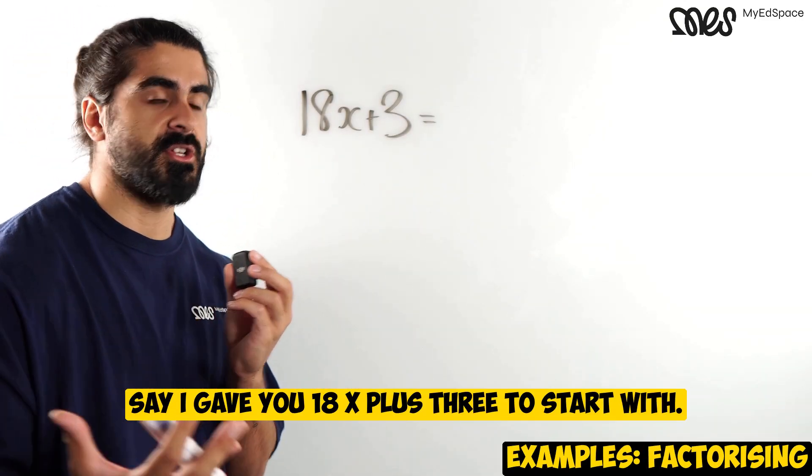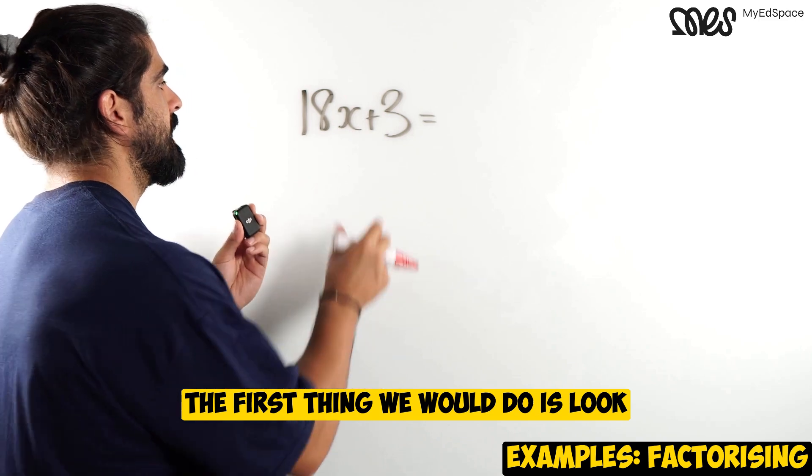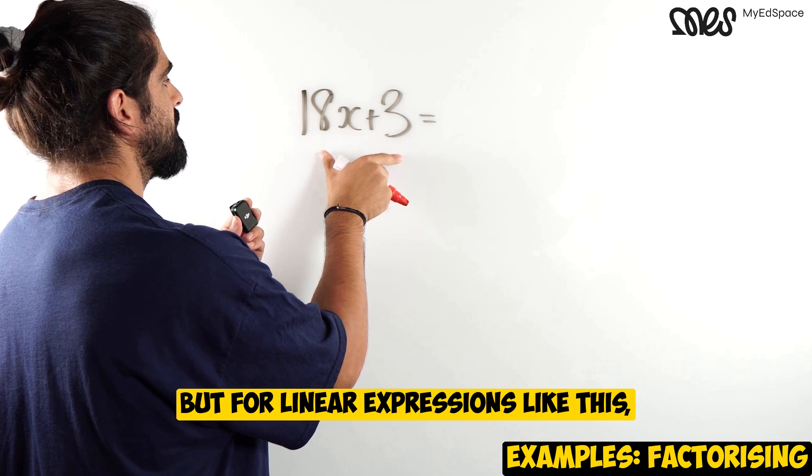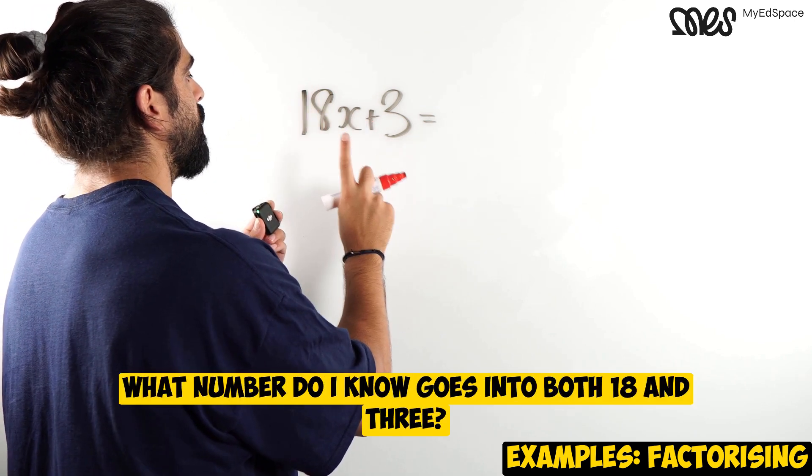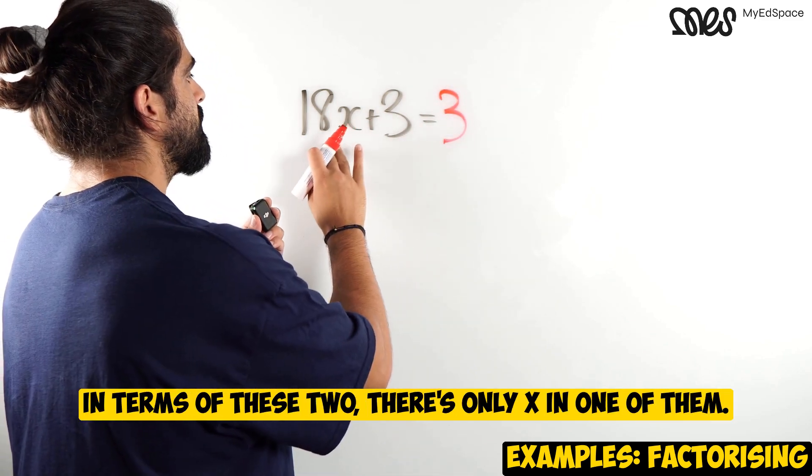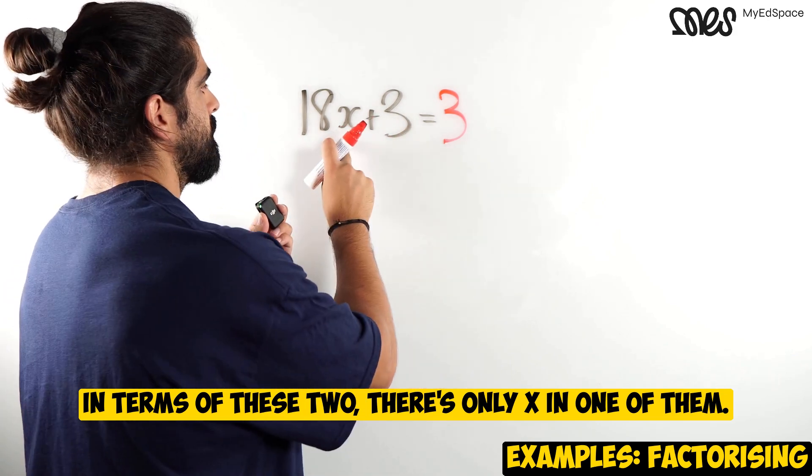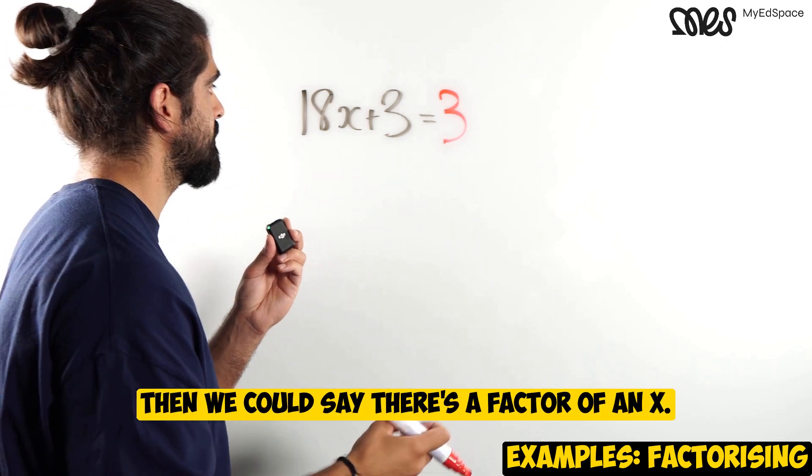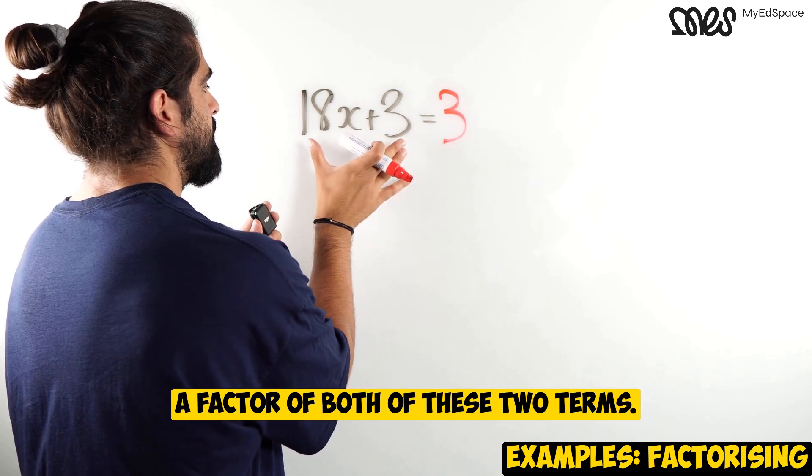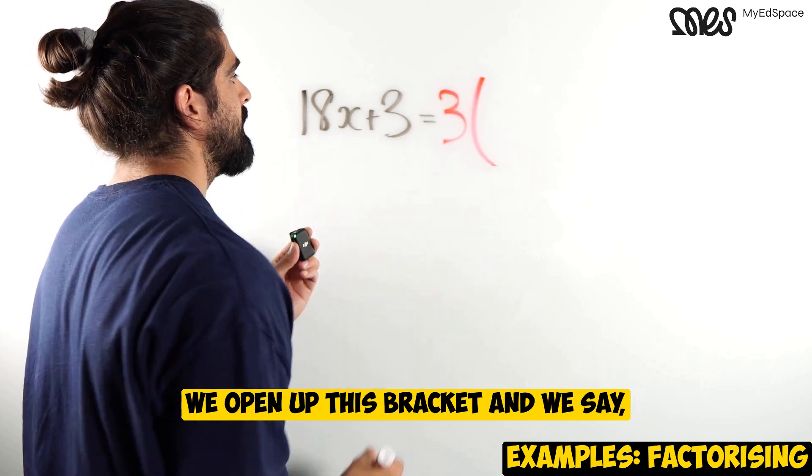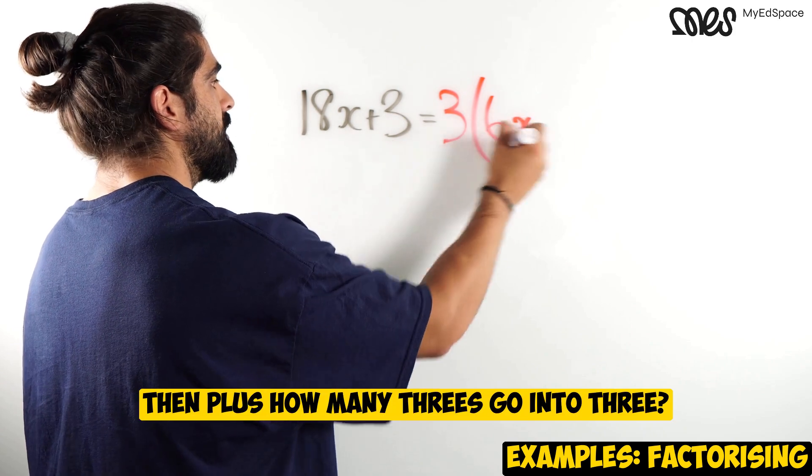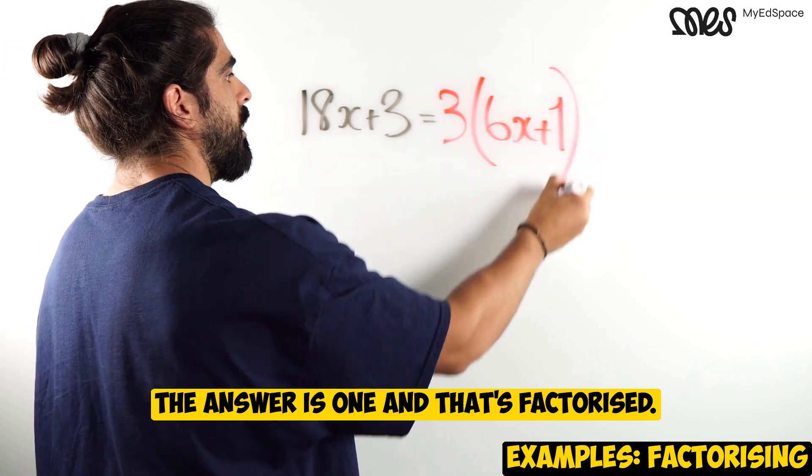So say I gave you 18x plus 3 to start with. If I want to factorize it, the first thing we would do is look at the numbers first and keep in mind this is linear expressions. When it comes to quadratics, it's a little bit different. But for linear expressions like this, you would just look at the numbers first and you would say, what number do I know goes into both 18 and 3? The answer is 3. Then you look at the letters. Well, in terms of these two, there's only x in one of them. If there was an x in both, then we could say there's a factor of an x. But because there's only an x in one of these, not this one, we can only say that 3 is a factor of both of these two terms. We open up this bracket and we say, how many 3s go into 18? The answer is 6. Then there's still that x there. Then plus, how many 3s go into 3? The answer is 1. And that's factorized.